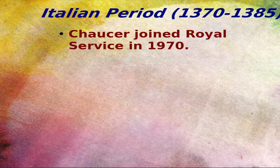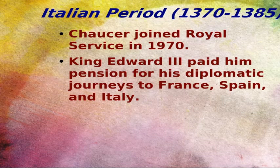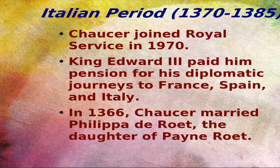The Italian period continued from 1370 to 1385. After his release from jail, Chaucer joined the royal service and traveled to France, Spain, and Italy on diplomatic missions. For this, he was granted a pension by Edward III. In 1366, Chaucer married Philippa Roet, the daughter of Paon de Roet, and the marriage helped him in advancing his career in the English court.